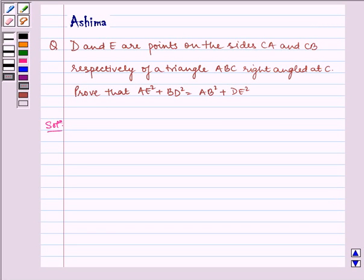Hello and welcome to the session. Let us understand the following question today. D and E are points on the sides CA and CB respectively of a triangle ABC right angled at C. Prove that AE squared plus BD squared is equal to AB squared plus DE squared.